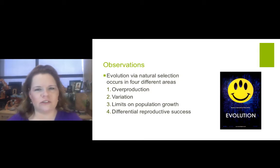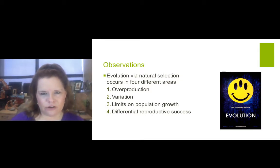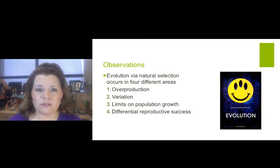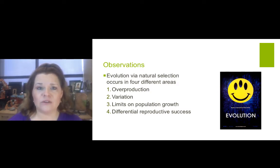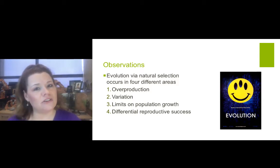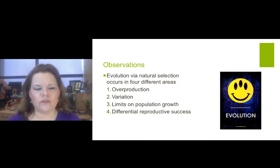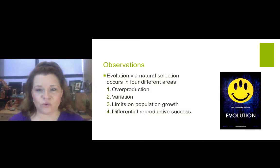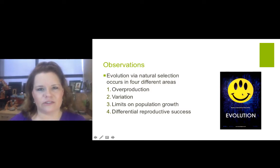So let's make some observations. What's wrong with the smiley evolution diagram on the right? Evolution via natural selection occurs in four different specific areas: one, overproduction; two, variation; three, limits on the population growth; and four, differential reproductive success. So where could something go wrong in one of those four steps? How could you end up with that scenario? A gene mutation.